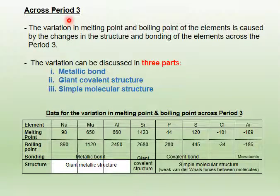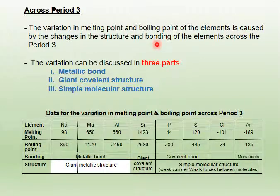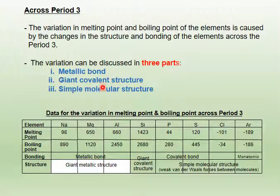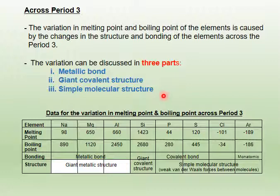Now let's discuss the melting point and boiling point across period 3 elements. The variation is caused by changes in the structure and bonding of the elements across period 3. The variation can be discussed in three parts. First, metallic bond — involving sodium, magnesium, and aluminium. Second, giant covalent structure — involving silicon. Third, simple molecular structure — involving the non-metals: phosphorus, sulfur, chlorine, and argon.